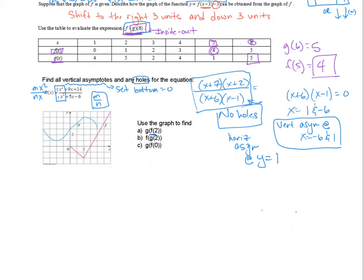We need g of f of 2 from the graph. Going inside out, I find f of 2 first. My f graph is the red one — at x equals 2, the value is negative 2. So f of 2 equals negative 2. Now step 2: g of negative 2. I go to x equals negative 2 on the graph, move up to the g graph, and that value is at 1. So g of f of 2 equals 1.